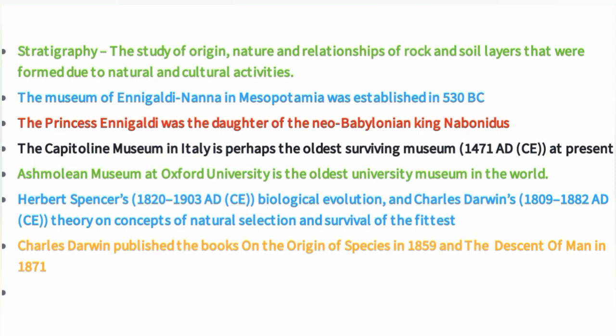The Capitoline museum is present in Italy. The Ashmolean museum at Oxford University is the oldest university museum in the world.